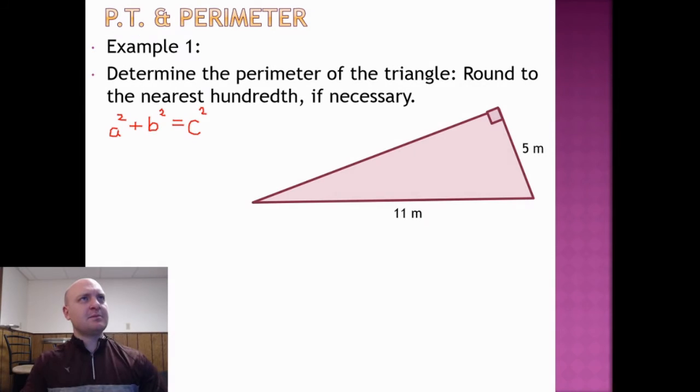Our first example here is asking us to determine the perimeter of the triangle, rounding to the nearest hundredth if necessary. Now looking at that I would like to just add up all the sides but I don't know the third side. This is where the Pythagorean theorem comes in. Since it's a right triangle, you can see that right angle marking in the corner, we should be able to use the Pythagorean theorem to solve for that third side.